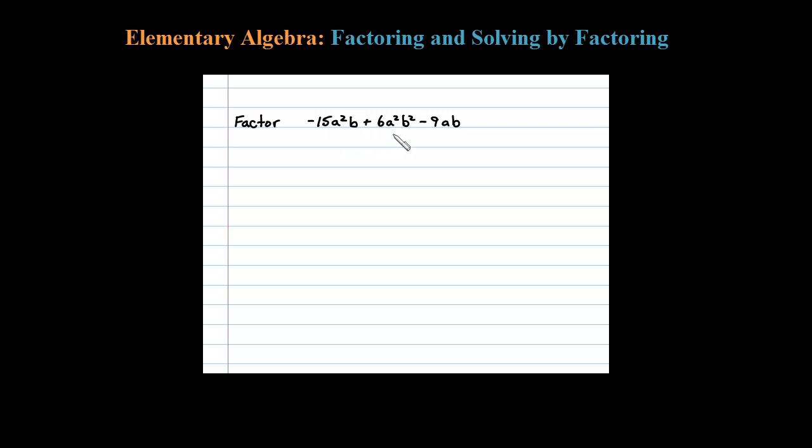Here we're asked to factor, and the only thing we have to do is factor out the GCF. Notice 3 goes into all the coefficients. Certainly they all have an 'a' in common and they all have one 'b' in common, so the GCF looks like it should be 3ab. Okay, and then we have to decide if we factor out 3ab, what will be left.